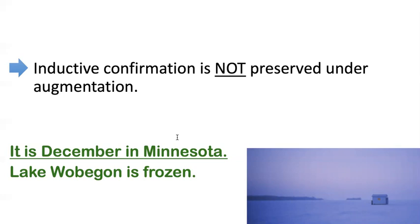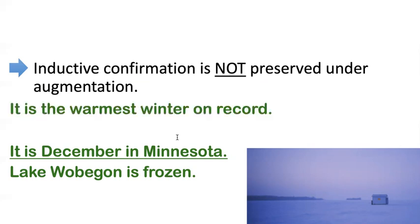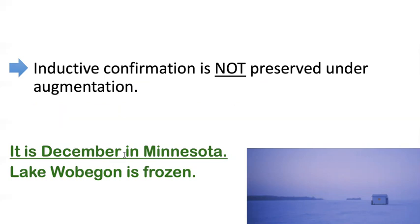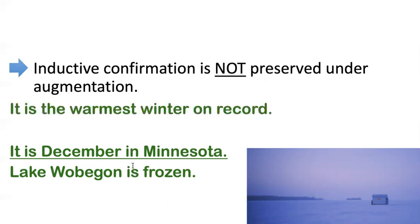But that doesn't mean I can't decrease the confirmation by adding more information. What if I tell you now it's the warmest winter in the history of recorded meteorology — it's never been this warm. Is it so sure that it's going to be frozen? Maybe eventually Lake Wobegon will be frozen by January or February, but if it's early December, maybe it's not frozen yet because it's so unseasonably warm. So even though my original argument was highly likely, I add more information and the likelihood decreases radically — it might become unlikely now, and the confirmation is lost.